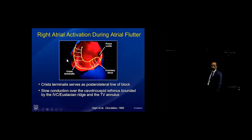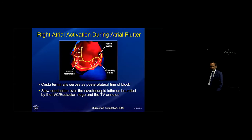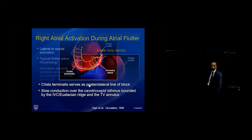Cavotricuspid isthmus flutter is not the same as peritricuspid valve flutter. In other words, the posterior boundaries that keep a circuit near the tricuspid valve are not complete all along the tricuspid valve. So we may have a tricuspid isthmus-dependent flutter, but parts of the circuit may be away from the tricuspid valve. This is important to keep in mind because we may entrain tricuspid isthmus-dependent flutter at unusual sites and focus our attention there, when we could have had a simpler solution with our usual cavotricuspid isthmus flutter approach.